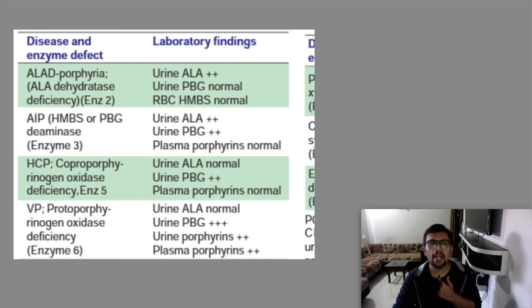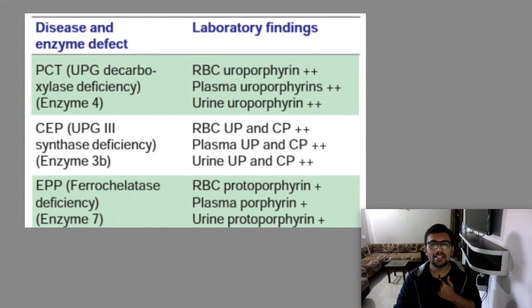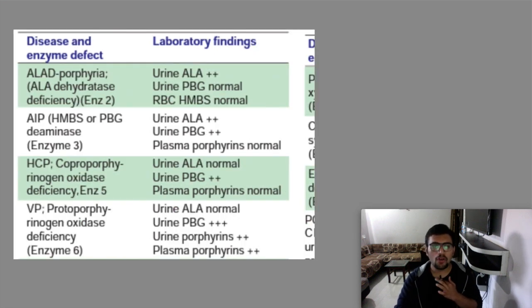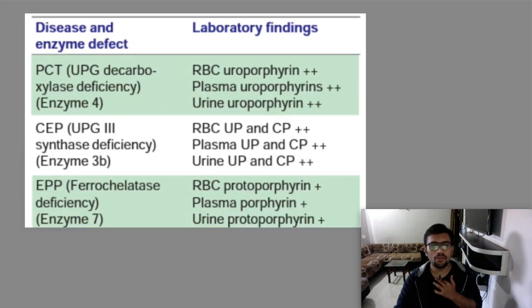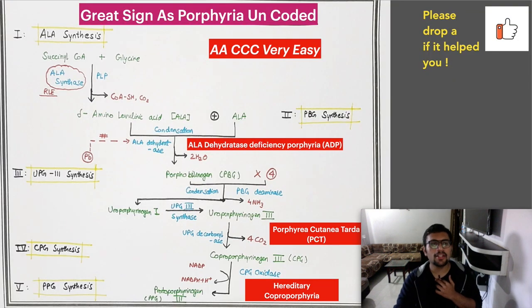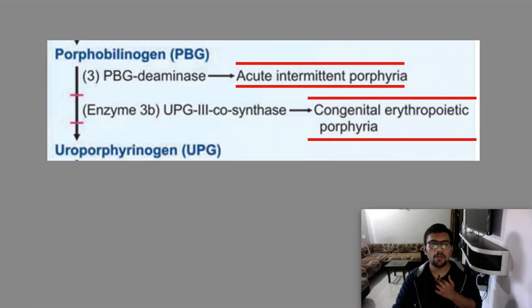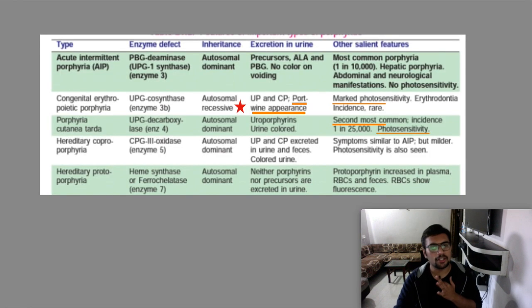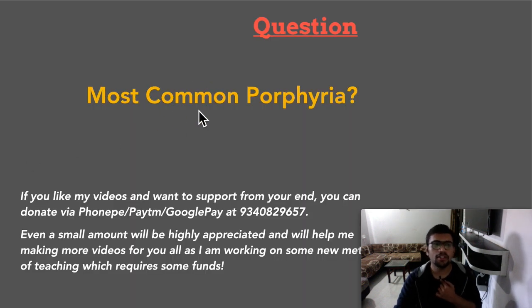This is all you need to know regarding porphyrias. Just remember the pathway well with all the deficient enzymes, the general symptoms, and this particular table — which will be sufficient at any level. To have a very good grasp, revisit each particular enzyme step, see what precursors and products increase, and map them to the laboratory findings. These two tables divide porphyrias according to early and late — hepatic and cutaneous.